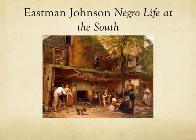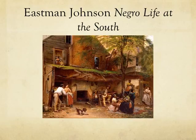Eastman Johnson's oil painting, Negro Life at the South, emphasizes the ramshackle, poverty-ridden slave quarters. This piece exemplifies the conditions many slaves in the South were confined to. In contrast, we are able to see the brick slave master's house in the far right corner.